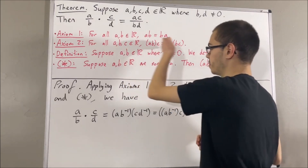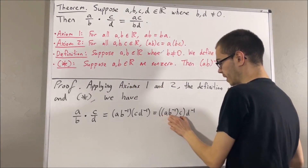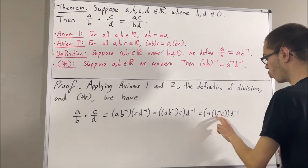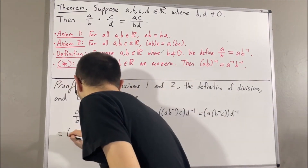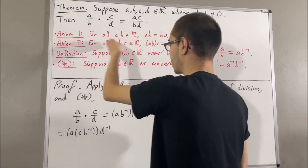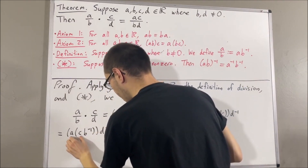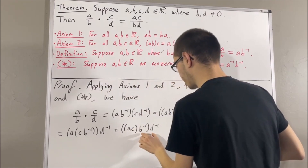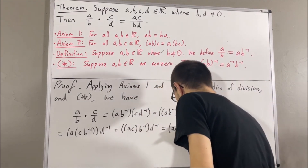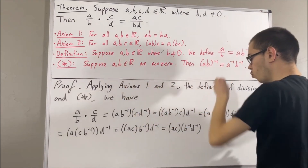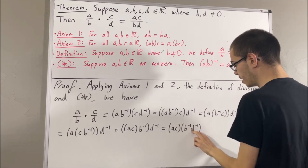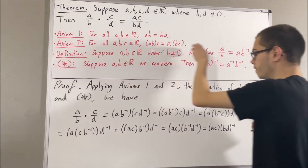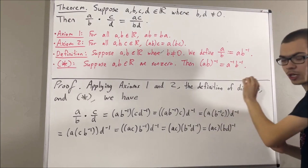Applying axiom 2 again, we move the inner parentheses around the reciprocal of B times C. Then, applying axiom 1, we swap the reciprocal of B and C. Then, applying axiom 2, we move the inner parentheses around AC. Then, applying axiom 2 again, we move the outer parentheses around the reciprocal of B times the reciprocal of D. Then, by star, the reciprocal of B times the reciprocal of D equals the reciprocal of BD. Finally, by definition of division, AC times the reciprocal of BD equals AC over BD.